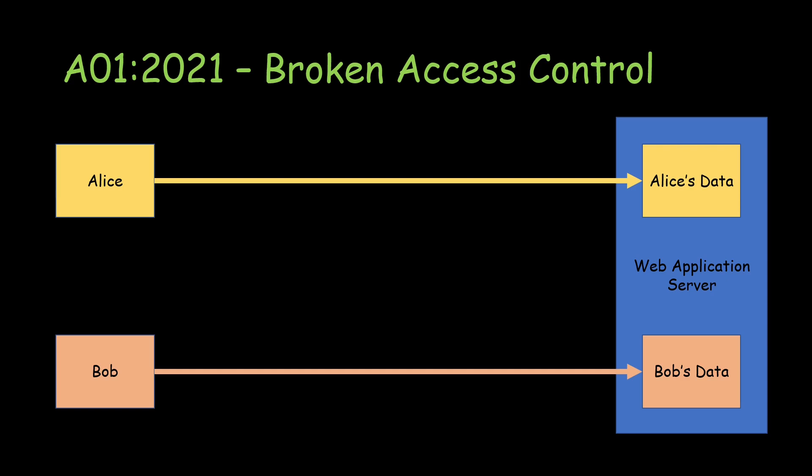Broken Access Control comes into play when Bob is able to access Alice's data. By the application's business logic, Bob should not be accessing Alice's data — but he is able to do so because of improper access control. If Bob makes a request to Alice's data and can access it, that is a clear example of Broken Access Control. This is what needs to be fixed by putting proper security measures in place.